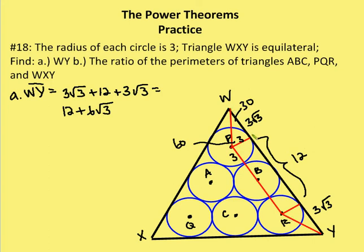Now I need the distance from W to the point of tangency. Since triangle WXY is equilateral, bisecting the angle at Y creates a 30-60-90 triangle. The side opposite the 30-degree angle — PK — is three, so the side opposite the 60-degree angle, WK, is three times root three. Remember: in a 30-60-90 triangle, if the short leg is X, the longer leg is X root three, and the hypotenuse is 2X.